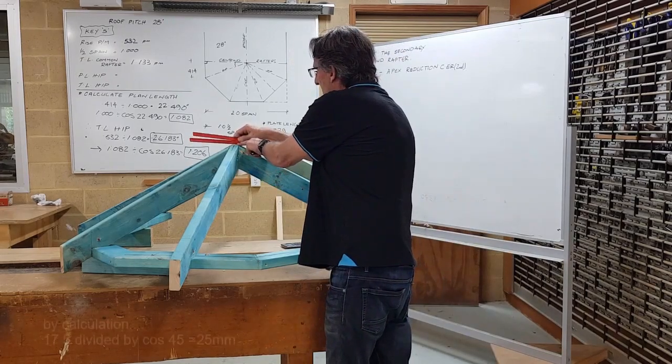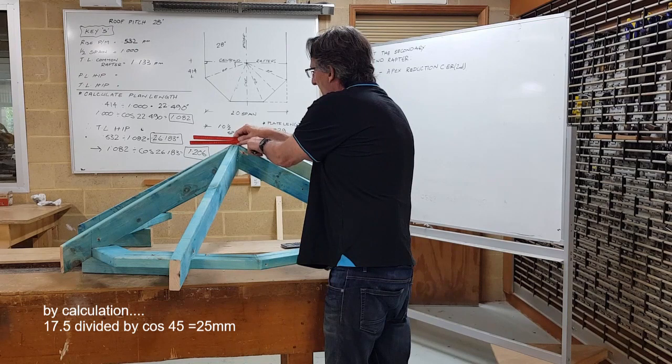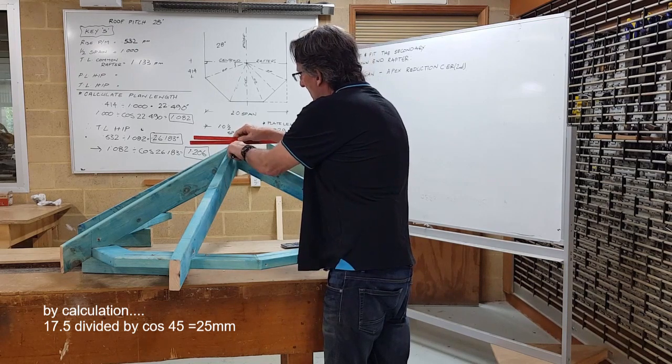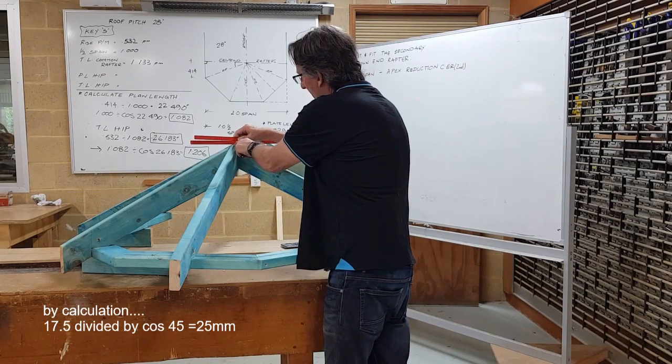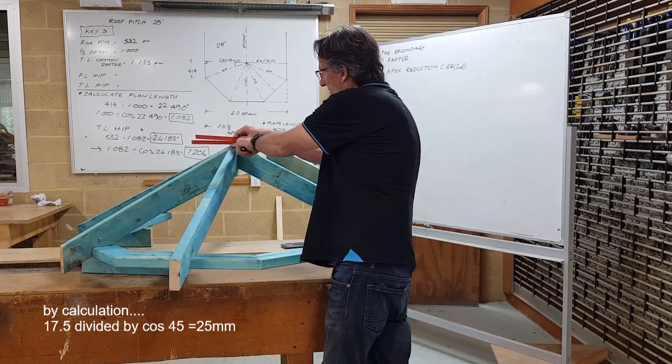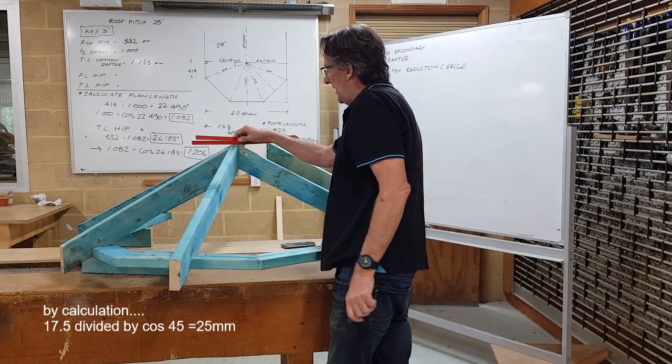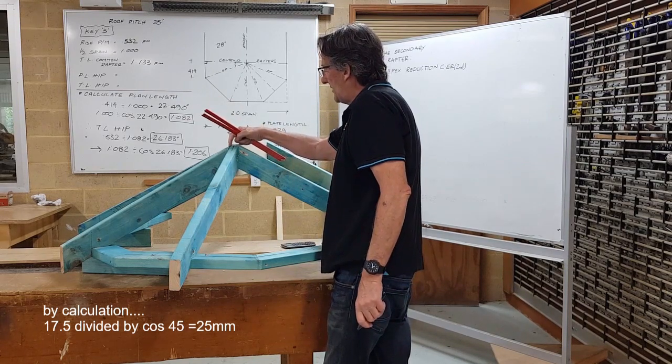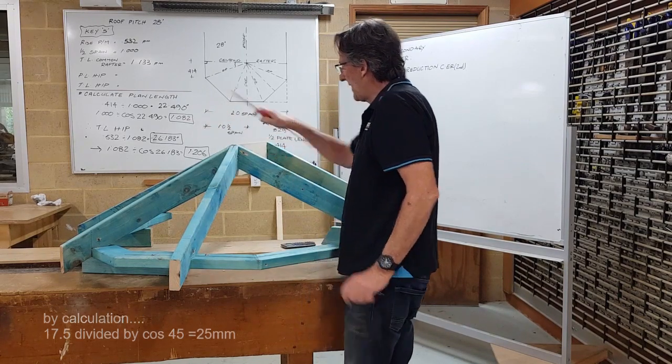I'm holding my rule on 200 aligned with the apex centering point. I'm calculating or measuring out 25 millimeters horizontally, 25 millimeters to where the long point of the secondary crown end rafter comes together in that connection.